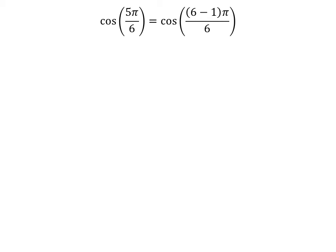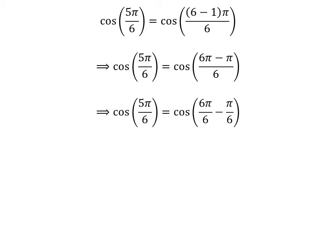We know 6 minus 1 is equal to 5, so cosine of 5 times pi upon 6 is equal to cosine of 6 minus 1 times pi upon 6. Expanding the numerator, we get cosine of 5 times pi upon 6 is equal to cosine of 6 times pi minus pi upon 6. The fraction 5 times pi upon 6 can be expressed as the difference of two fractions: 6 times pi upon 6 and pi upon 6.